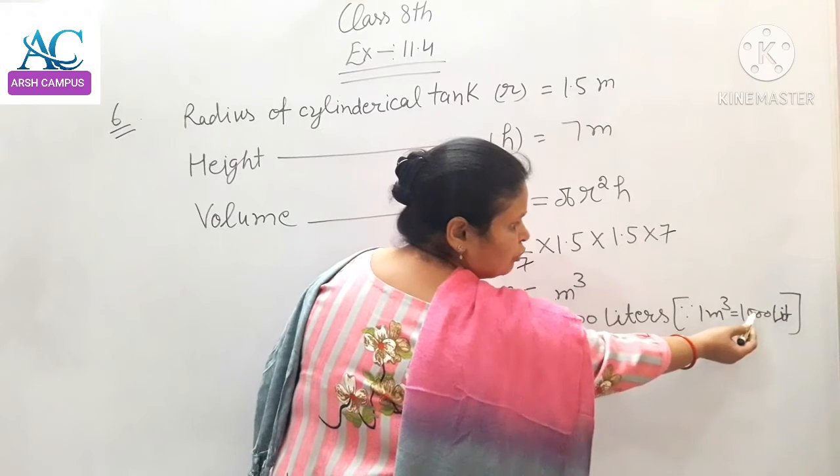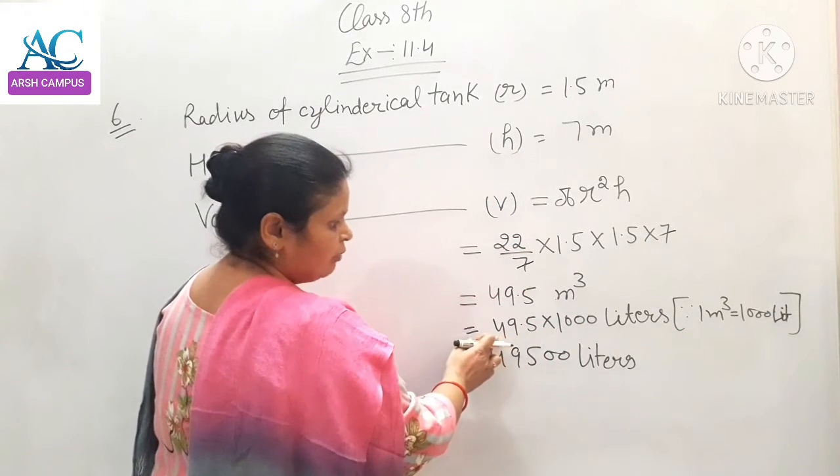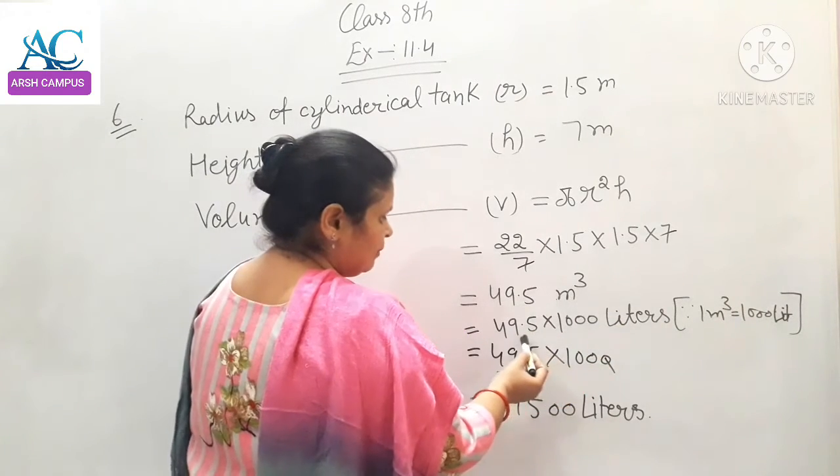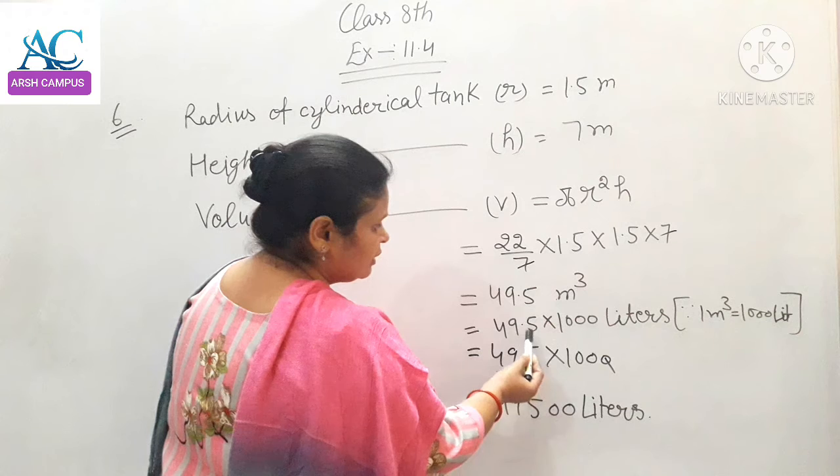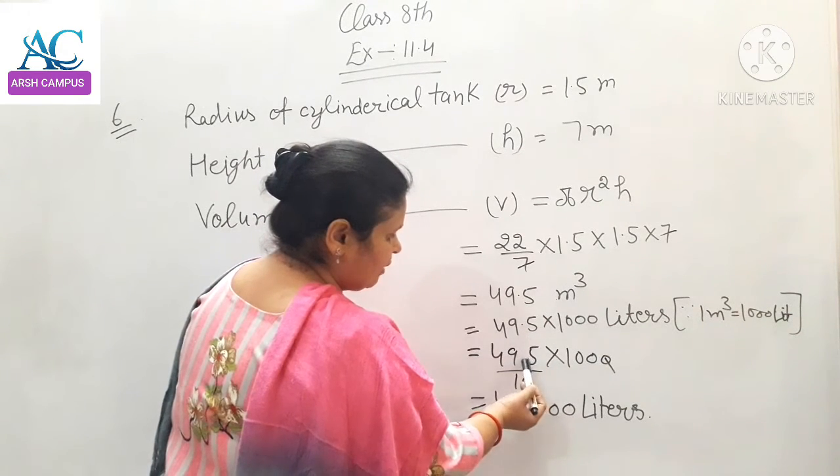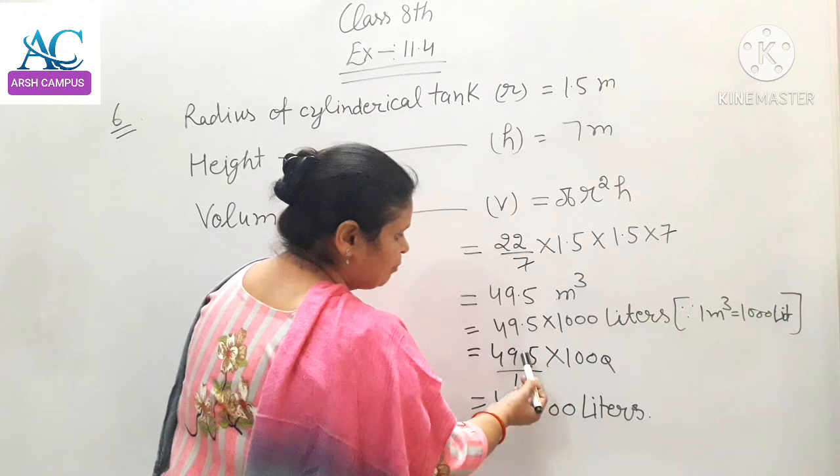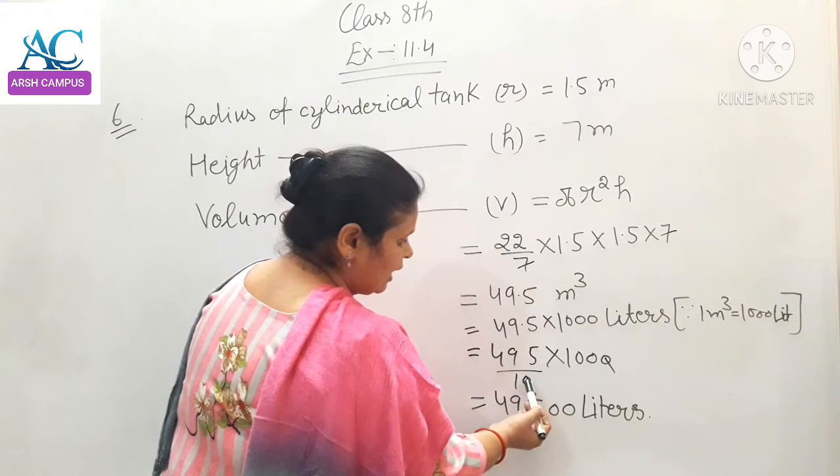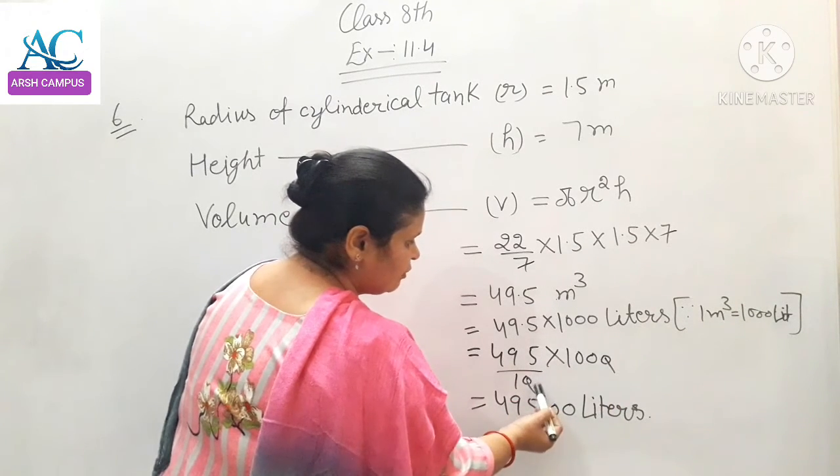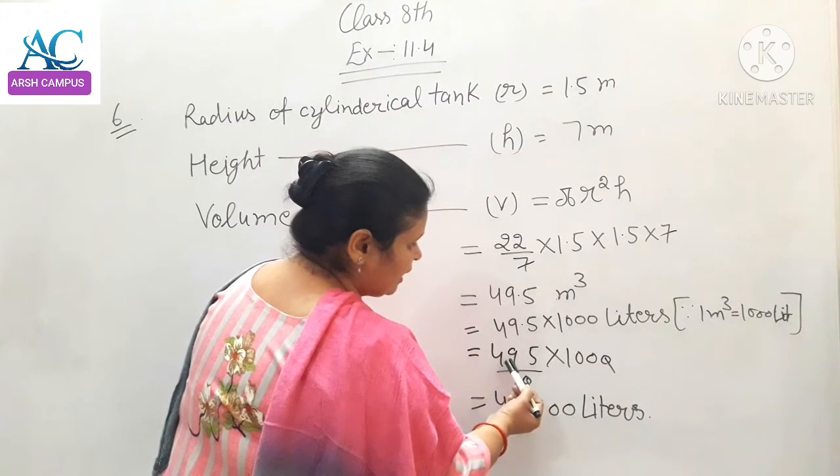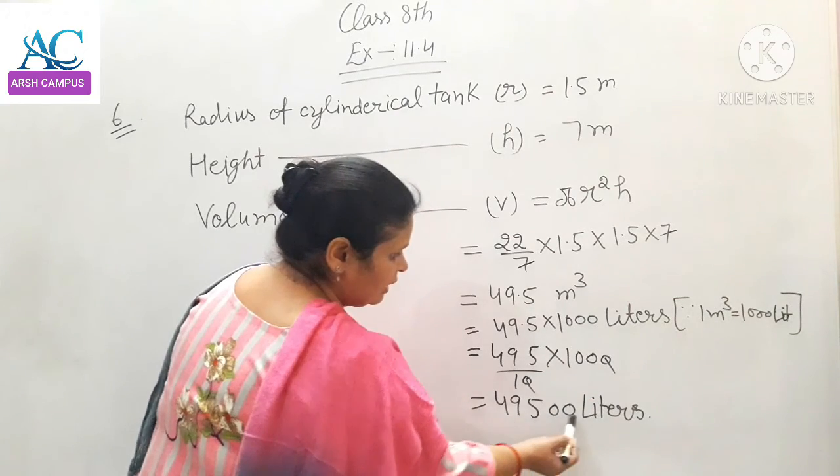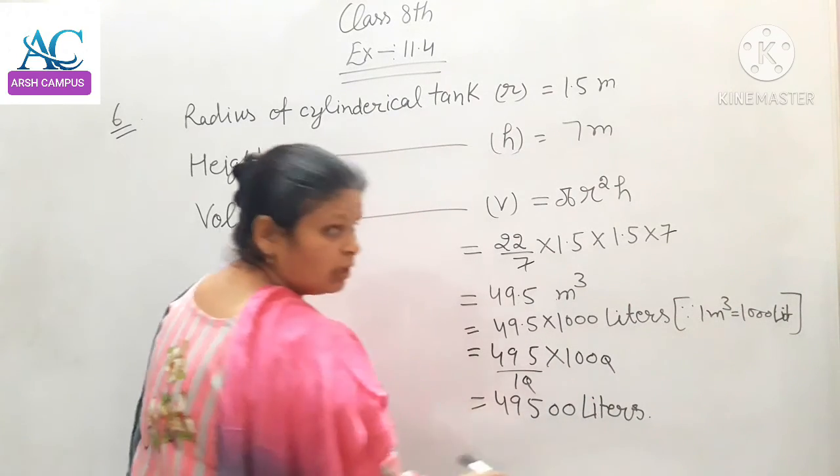1 meter cube equals thousand liters. 49.5 into thousand liters. 49.5 has a decimal point, so multiply by 10 to remove it, making 495, then multiply by 100. Your answer is 49,500 liters.